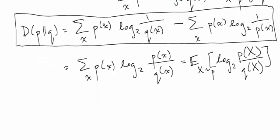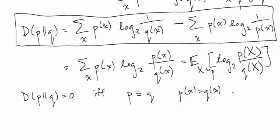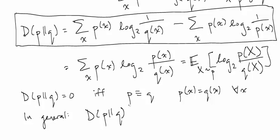Two important properties. First, an extremely important property is that the divergence between p and q equals 0 if and only if p and q are the same distribution — meaning p(x) equals q(x) for all x. It's like a distance: when the distance is 0, the two things we're measuring between are the same. This property is called Gibbs' inequality. However, divergence is not like distance because, in general, the divergence between p and q is not equal to the divergence between q and p.